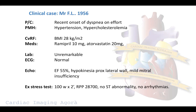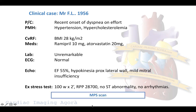At echo, we find an ejection fraction of 55%, but there is a hypokinesia in the proximal lateral wall with mild mitral insufficiency. He was submitted to an exercise stress test and reached a rate pressure product at peak of 28,000, which is quite normal, without ST abnormalities, symptoms, or arrhythmias. So we decided to submit him to a myocardial perfusion scan with an exercise stress test in order to define if there is inducible ischemia.